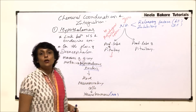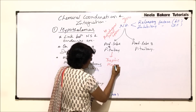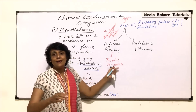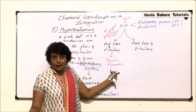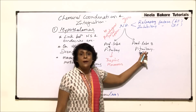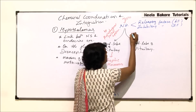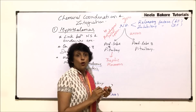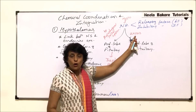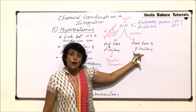The anterior lobe of the pituitary then secretes trophic hormones — hormones secreted by one endocrine gland that stimulate another endocrine gland. The posterior lobe also receives some neurohormones, but these travel via axons. There are neurons connecting the hypothalamus to the posterior lobe, and through their axons these hormones are conducted to the posterior lobe of the pituitary.